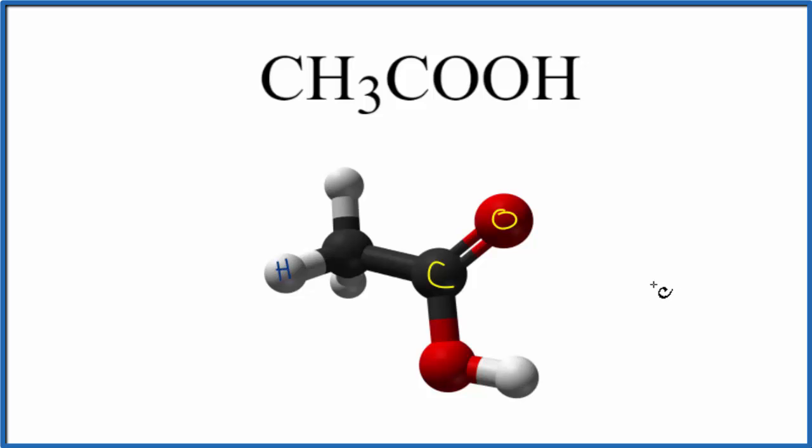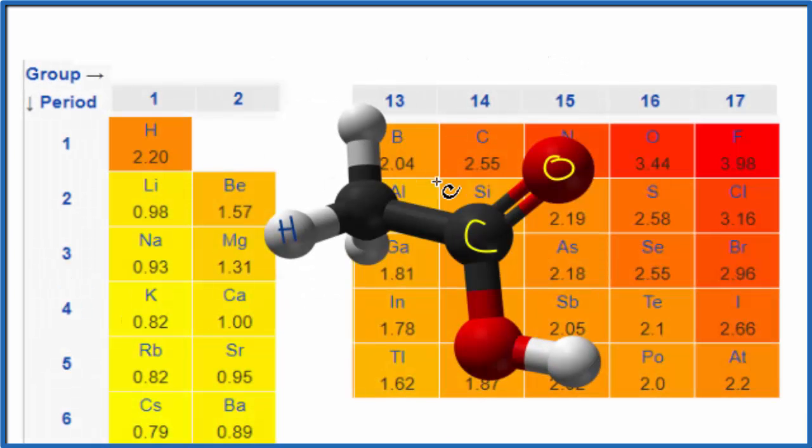But let's take a look at the differences in electronegativity between each bond here in the CH3COOH. So on this end here, we have carbon and hydrogen. So we have a difference 2.55 and 2.20. So these bonds right here between the carbons and the hydrogens, there's not a big difference. In fact, it's less than 0.5. So we consider these bonds here to be non-polar bonds.